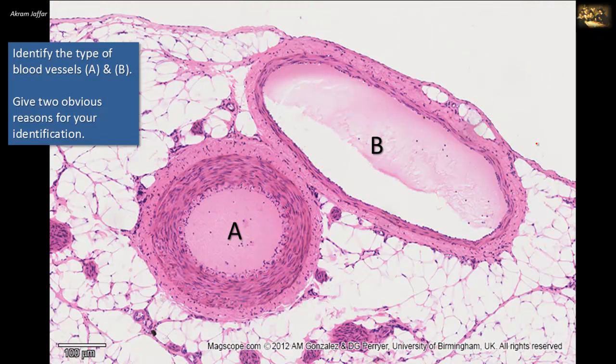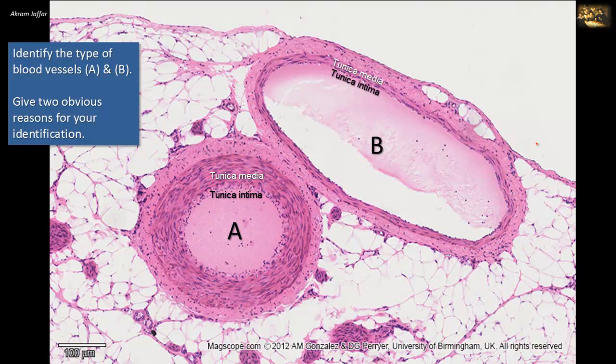Identify the type of blood vessels A and B. Give two obvious reasons for your identification. Both blood vessels show the three layers of tunica intima, media, and adventitia.